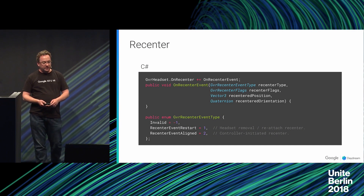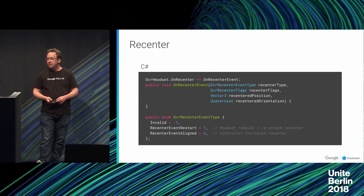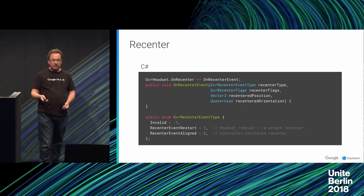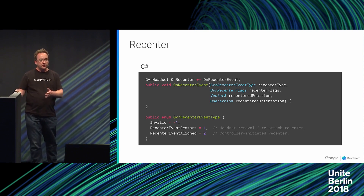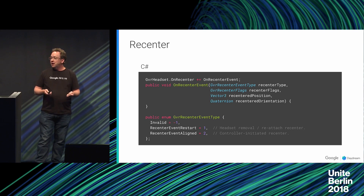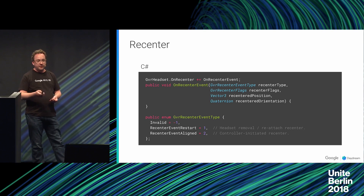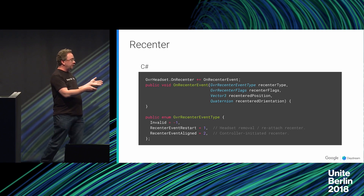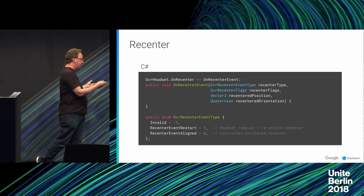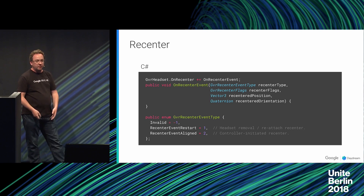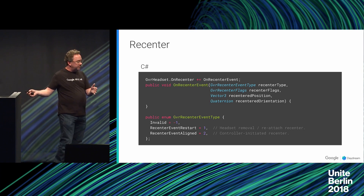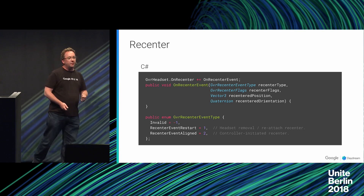The GVR also provides a new event for getting notified when the recentering gesture completes. It will tell you the difference from the old position and orientation to the new position and orientation. This is useful if you want a recentering operation to not change where the user is looking — for example, if they're looking to the left and recenter, you can counter-rotate to maintain their orientation while moving the safety cylinder and realigning the controller.